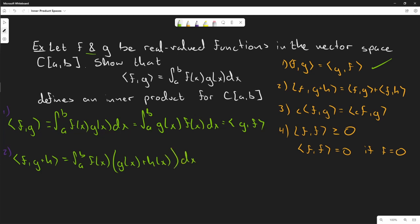We can distribute f(x) with g(x) and h(x), so we have the integral from a to b of f(x)g(x) plus f(x)h(x) dx. We can separate it into two integrals because you can separate additive integrals.